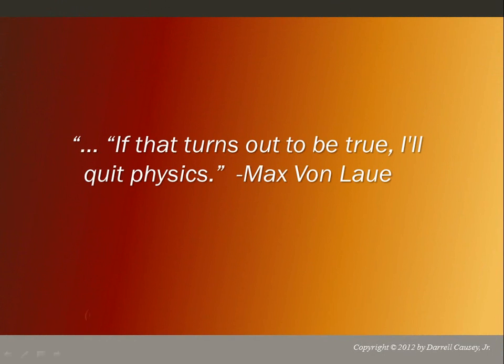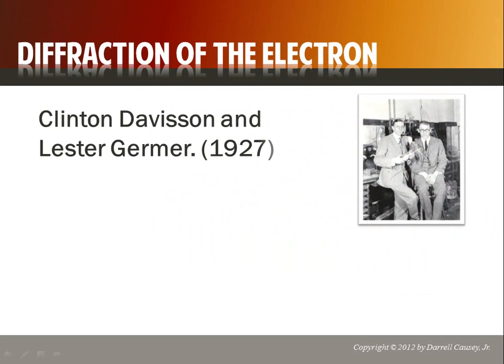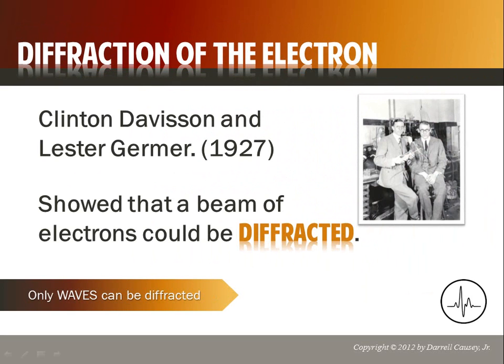If de Broglie's hypothesis turned out to be true, one physicist said he'd quit physics. The sad thing is, Clinton Davisson and Lester Germer showed that a beam of electrons could be diffracted. What was important about this is that only waves can be diffracted — so if only waves can be diffracted, then electrons must have wave properties. But we also know that electrons are matter; they're a very small piece of matter and they have a mass.